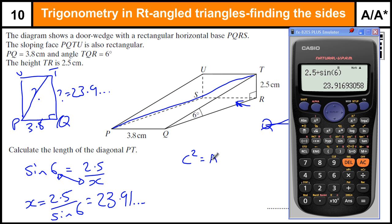To find this side, I need to use Pythagoras theorem where the hypotenuse C squared equals A squared plus B squared. I'm going to call this A and this B. So A squared is 3.8 squared, B squared is my 23.9 squared. I've still got my 23.9 in there. I'm going to square that answer. So that's my 23.9 squared. I'm going to add 3.8 squared.